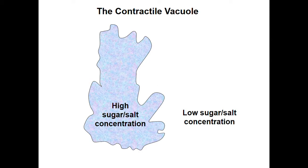Now, the contractile vacuole is a very unique thing that helps amoeba stay stable. As we know, osmosis is the movement of molecules from a higher concentration to a lower concentration. Inside amoeba there is a higher concentration, and the surrounding water is at a lower concentration. Water will rush into the amoeba, causing it to keep bulging and bulging until it would burst.